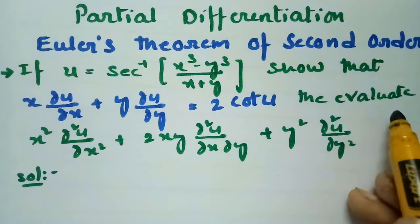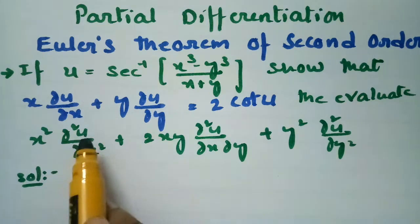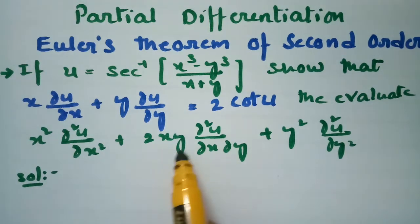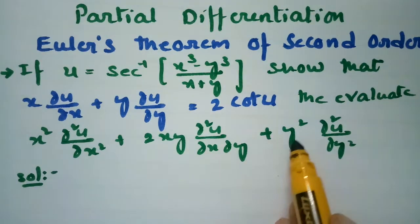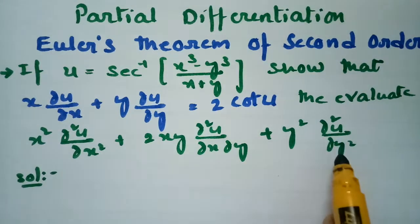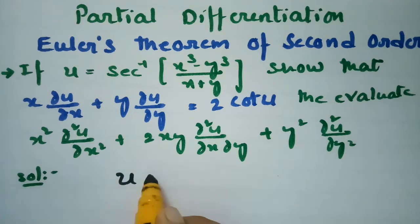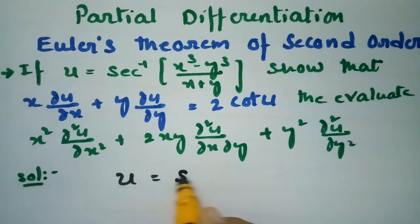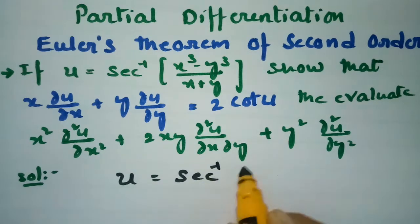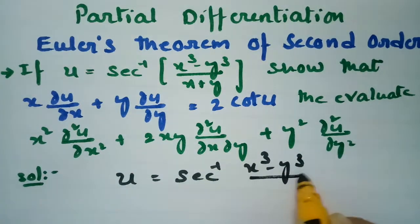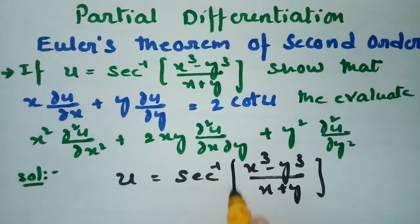And also, we have to evaluate x squared ∂²u/∂x² plus 2x ∂²u/∂x∂y plus y squared into ∂²u/∂y². Here, u is given as secant inverse of x cube minus y cube by x plus y.